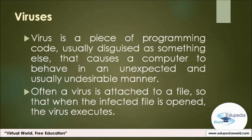The first malicious type we are going to discuss is viruses. A computer virus is a piece of programming code, usually disguised as something else, that causes a computer to behave in an unexpected and usually undesirable manner. Often, a virus is attached to a file so that when the infected file is opened, the virus executes. Other viruses sit in a computer's memory and infect files as the computer opens, modifies, or creates them.